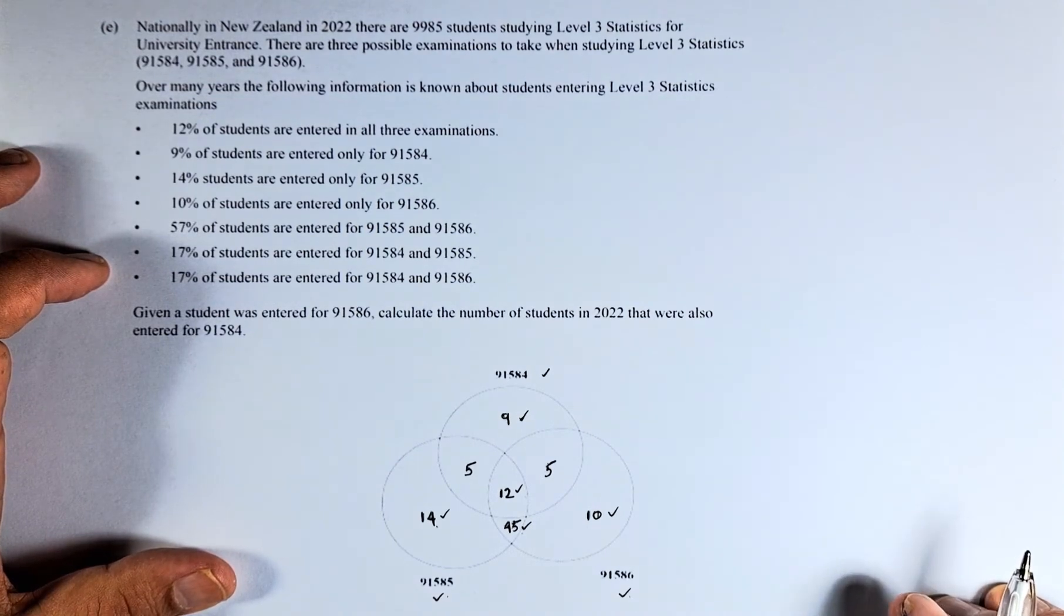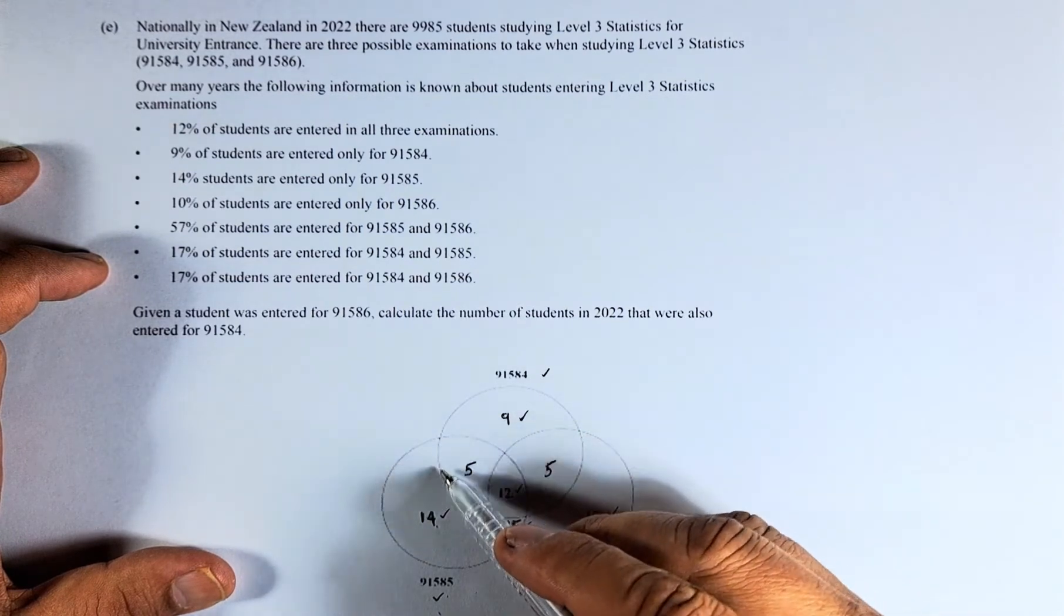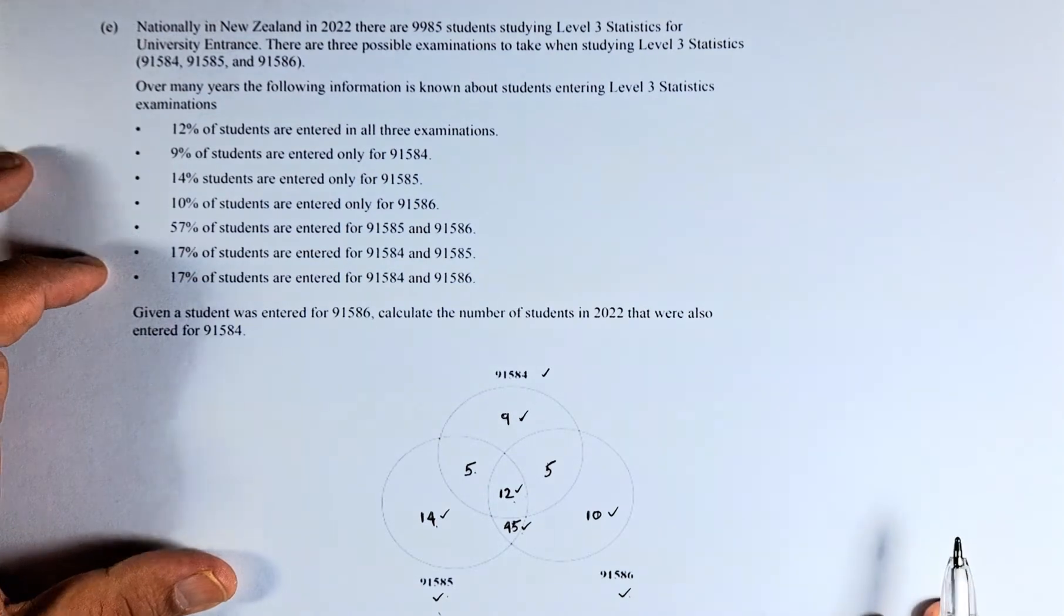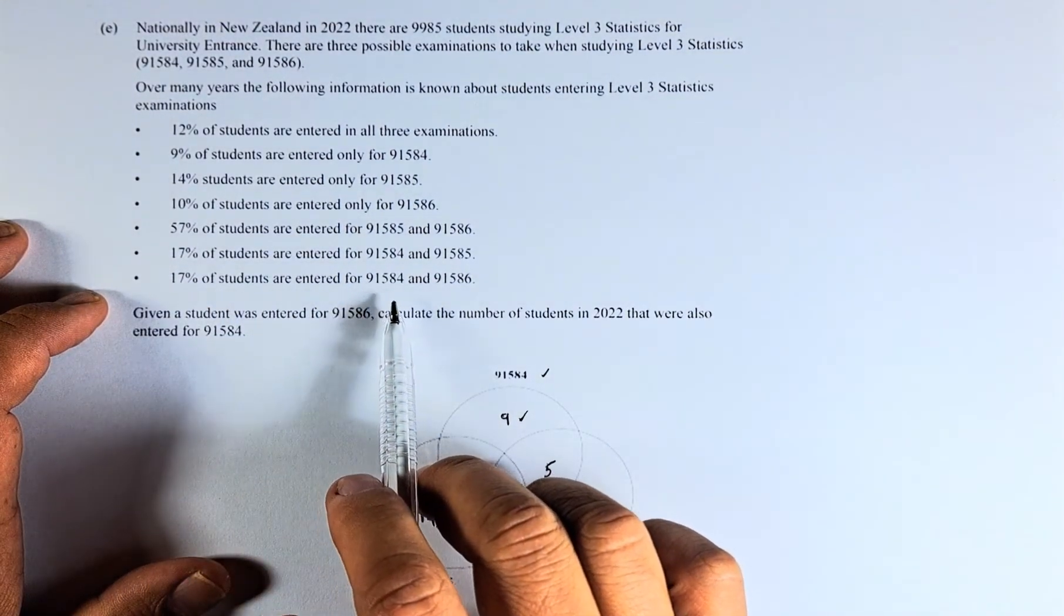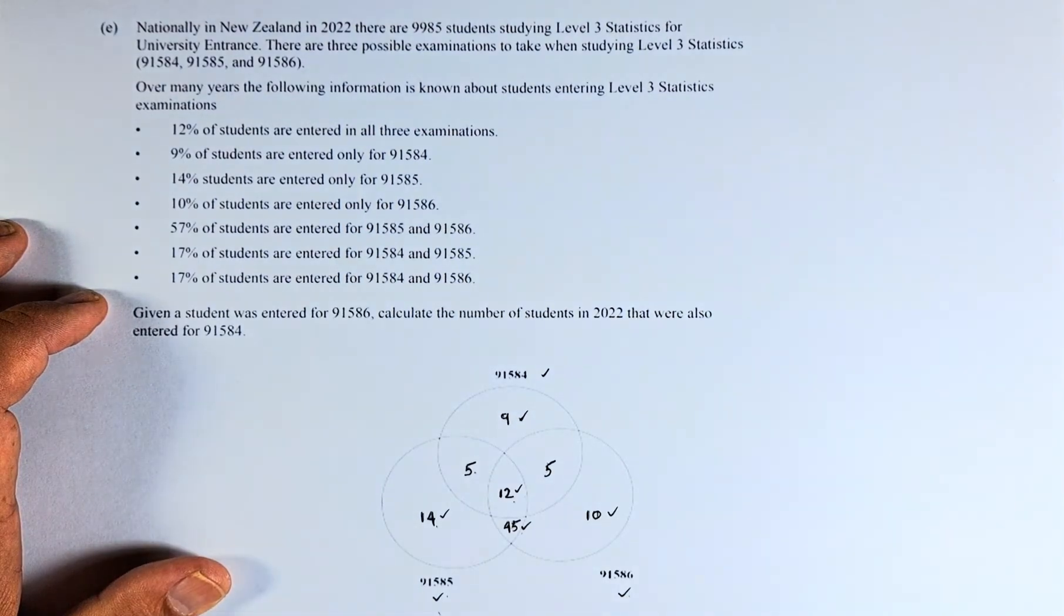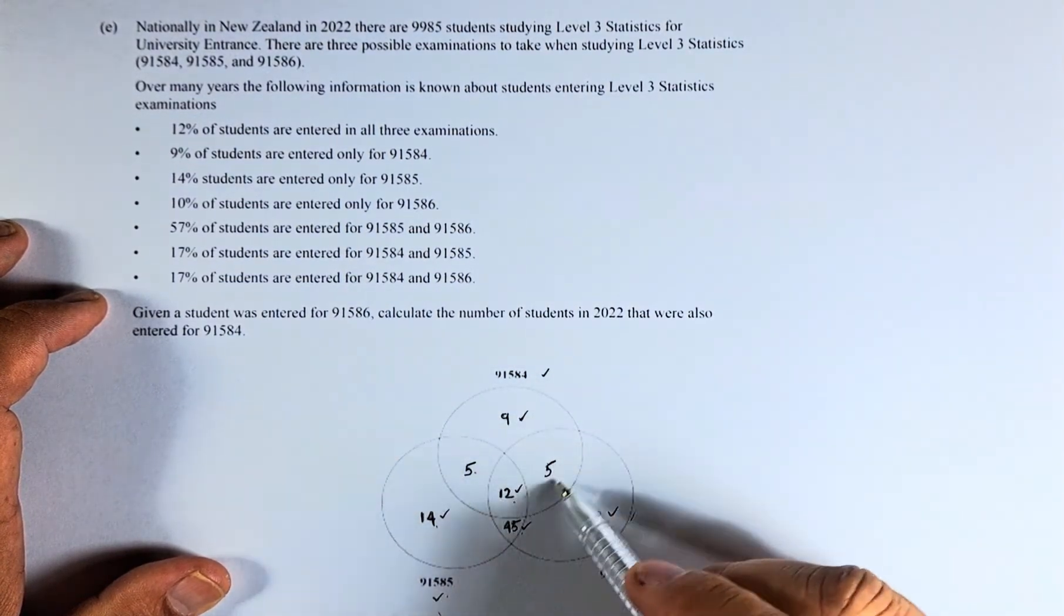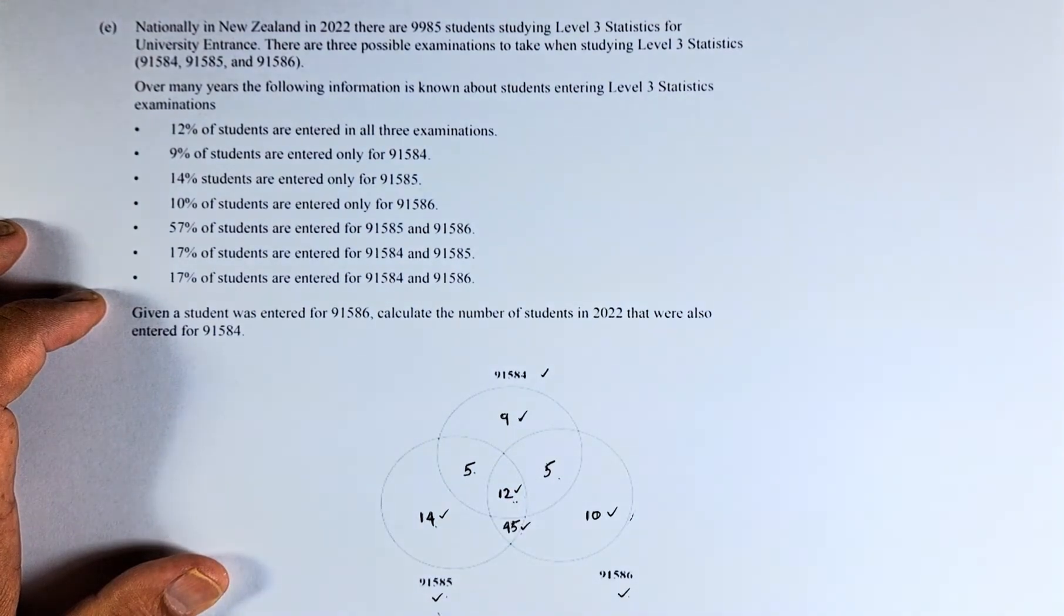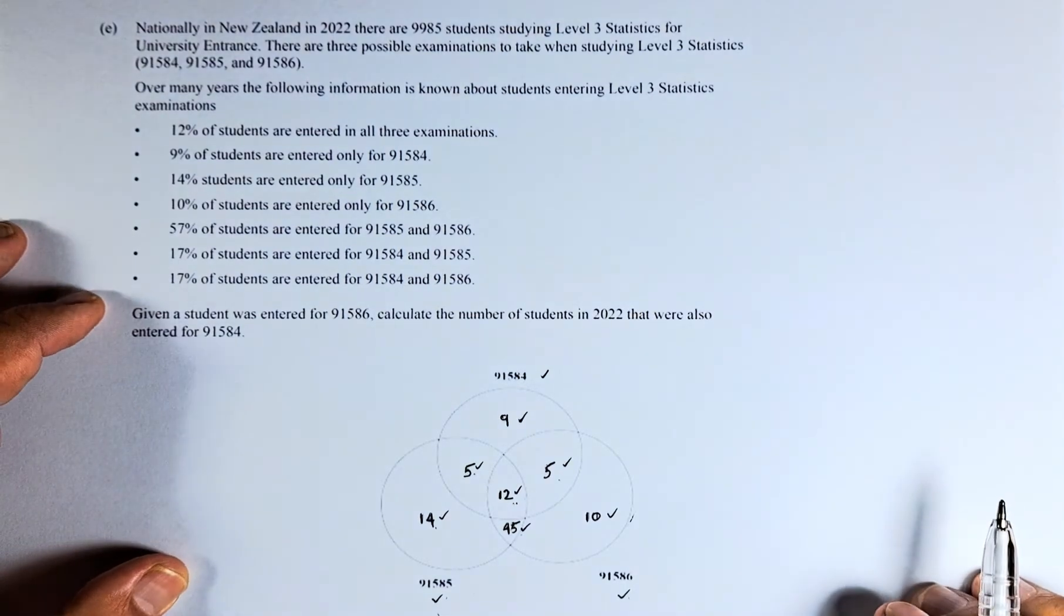17% entered for 91584 and 91585. So this number here has to be 17%. This is 12, so that has to be 5. And last but not least, 17% of the students are entered for 91584 and 91586. So 91584 is over here, and 91586 is here. This region here has to be 17. 12 is given, so 17 minus 12 gives us 5. All these numbers can be found using calculation.